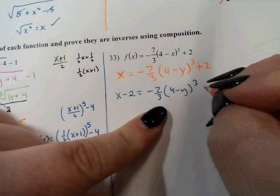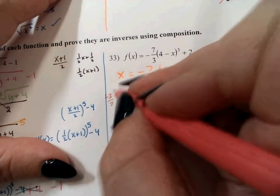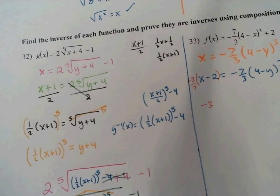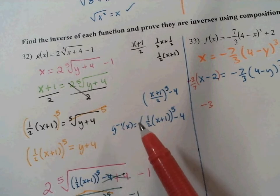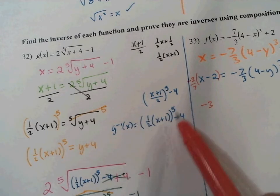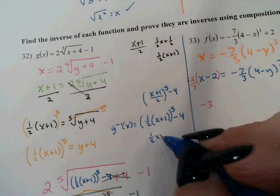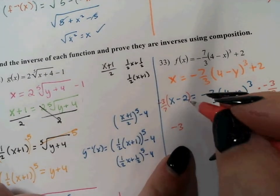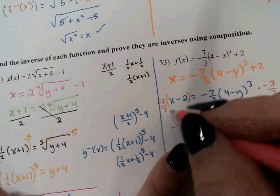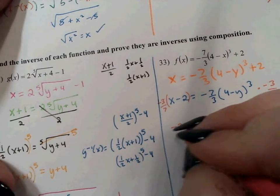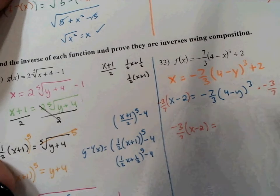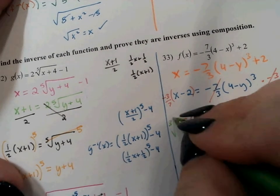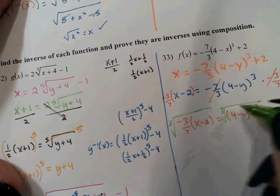The next thing I'm going to do is multiply by negative 3 sevenths. You could distribute that — you could say negative 3x plus 6 all over 7, or negative 3 sevenths x plus 6 sevenths — but I'm okay if we just leave it in factored form. That gives us negative 3 sevenths times x minus 2 equals 4 minus y, quantity cubed. Now we're going to take the cubed root of both sides, because that's the opposite of the cube power.